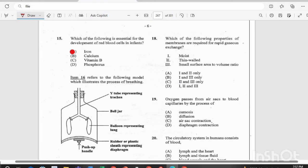Question 18. Which of the following properties of membranes are required for rapid gaseous exchange? Is it A, they need to be moist and thin-walled only? B, they need to be moist and have a small surface area to volume ratio? Is it C, having a thin wall and small surface area to volume ratio only? Or is it D, having moist, thin-walled, small surface area to volume ratio? And so the answer there is A, they must be moist and thin-walled. They actually need a large surface area to volume ratio, not a small one.